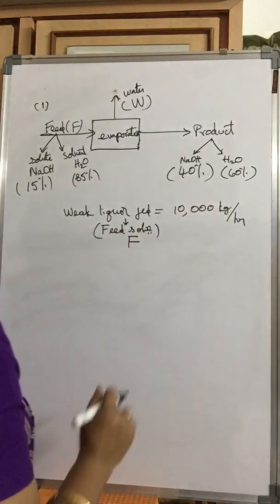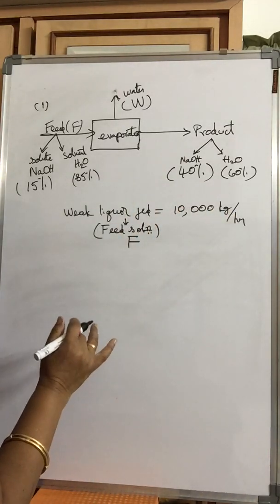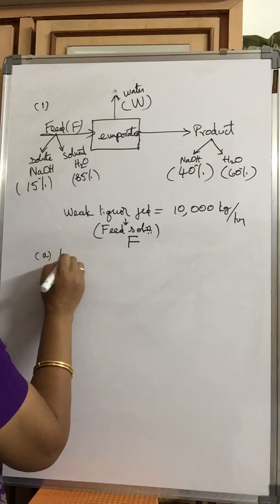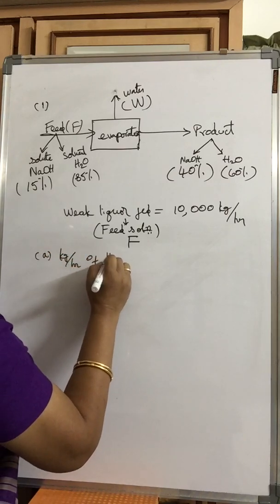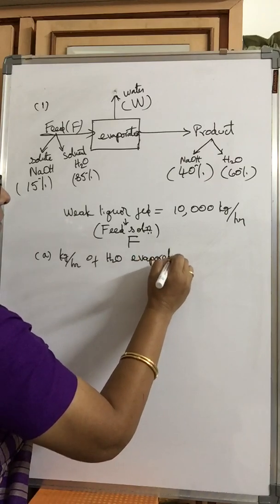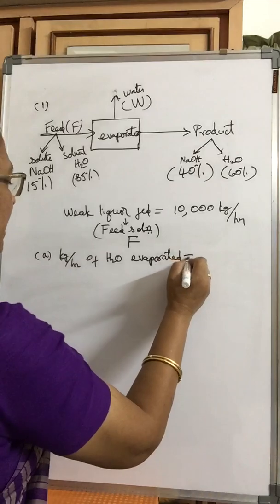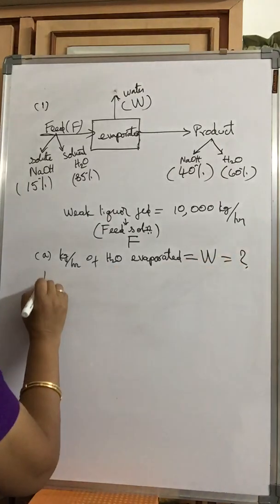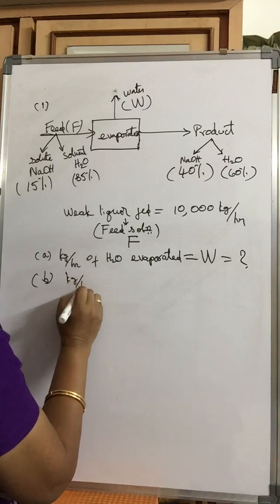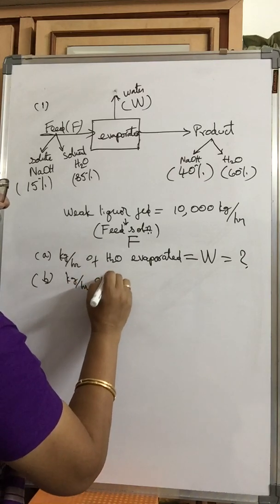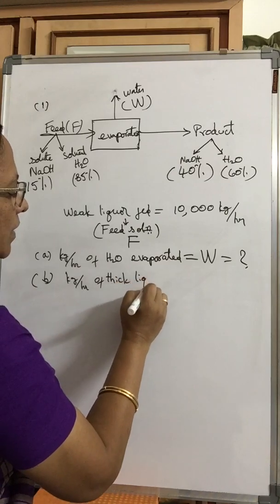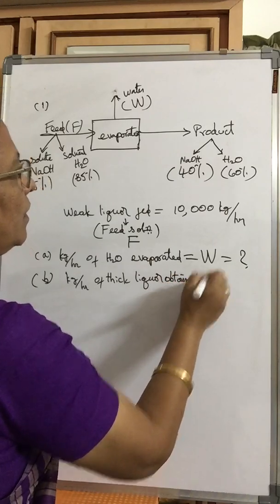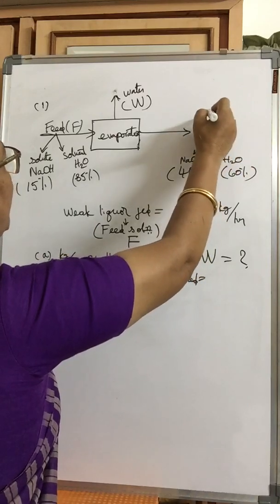F is 10,000 kg per hour — that is the information given. Part A asks for kg per hour of water evaporated, which is W. Part B asks for kg per hour of thick liquor obtained, which we call P.